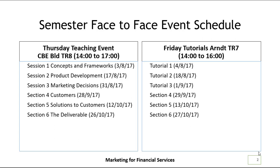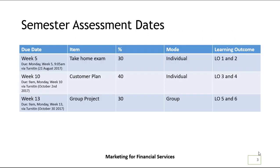This individual task is going to link to several other elements. There will be a component linkage where you create your customer plan, and your customer plan will join with the rest of your teammates' and groupmates' plans in the group project. The idea is that you want to be producing something that is an individual piece of work, for your own development, but you can do it so that it sits in alignment with the group project. You can talk to your teammates and cross-collaborate to produce a series of individually and independently developed assignments that link together and work together.